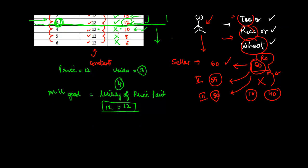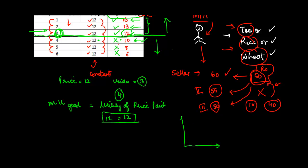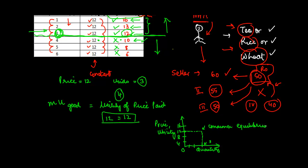Graphically, price and utility are shown on the y-axis and quantity on the x-axis. With values of 4, 8, 12, and 16 on the y-axis, when both the price and marginal utility are at 12 and the quantity is 3, that point is the consumer equilibrium. This is where the consumer achieves equilibrium for a single commodity.